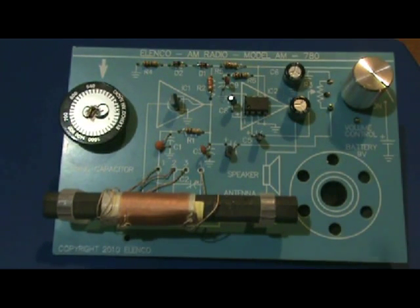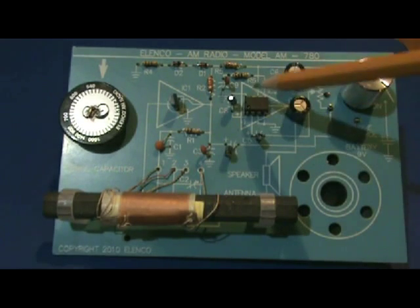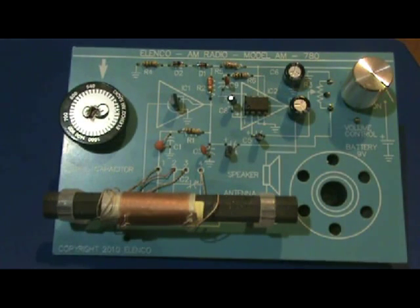The signal goes through C5 to the audio amplifier IC2, which is an LM386 amplifier. This integrated circuit amplifies the signal to a suitable audio level.